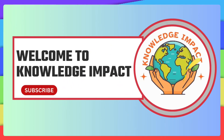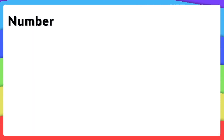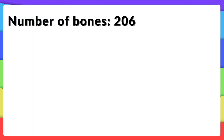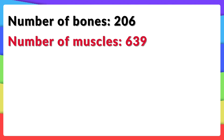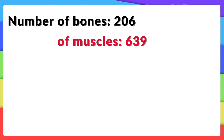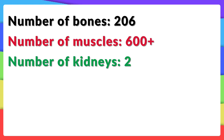Welcome to Knowledge Impact. Number of bones: 206. Number of muscles: 639. Number of kidneys: 2.